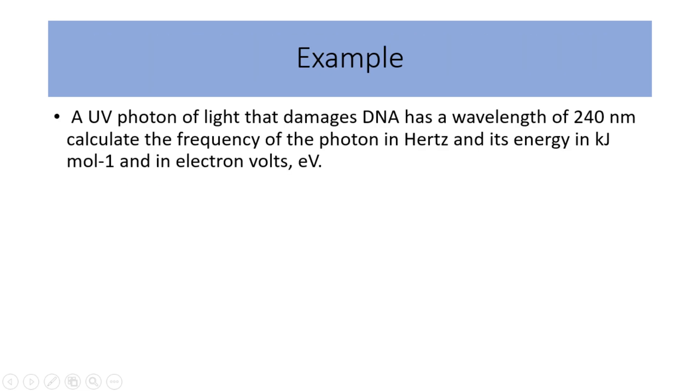Let us take this example. A UV photon of light that damages DNA has a wavelength of 240 nanometers. Calculate the frequency of the photon in hertz and its energy in kilojoules per mole and in electron volts. First, to calculate the frequency, nu, we use the formula c is equal to nu multiplied by the wavelength, lambda. If we want to find out the value of nu, then nu is equal to c divided by lambda. We know that c equals 2.998 times 10 to the power of 8. Also, we know that a nanometer is equal to 1 by 10 to the power of negative 9 of a meter. So, 2.998 times 10 to the power of 8, divided by 240 times 10 to the power of negative 9, equals 1.24 times 10 to the power of 15. And the unit is hertz.